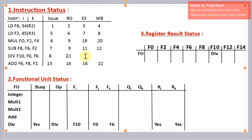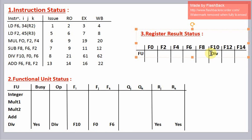The divide instruction takes 40 cycles to execute. So the divide instruction completes its execution after clock cycle 61 and writes back its result after clock cycle 62. So after the 62nd clock cycle, the divider unit writes its result in f10 and becomes free.